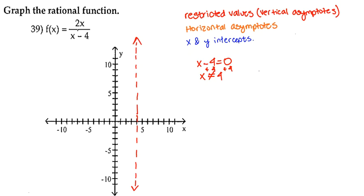Next, we're going to find our horizontal asymptotes. Horizontal asymptotes have to do with the degree of the numerator — let's call that m — and the degree of the denominator — let's call that n. If m equals n, you have a horizontal asymptote at the leading coefficient of the numerator over the leading coefficient of the denominator. If m is greater than n, there is no horizontal asymptote. And if m is less than n, you have a horizontal asymptote at y equals 0.